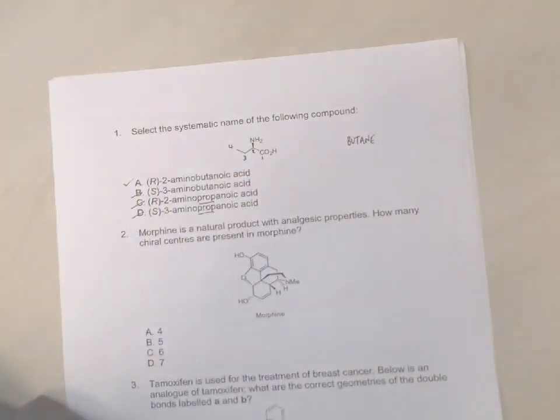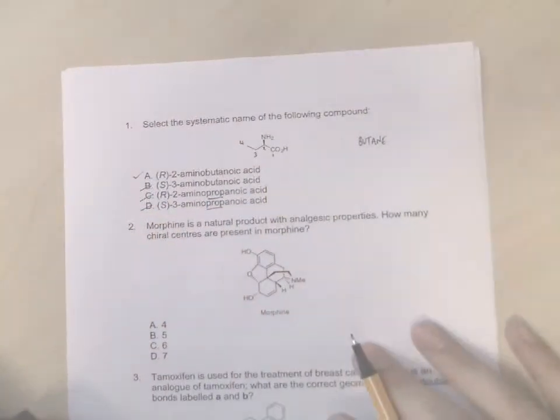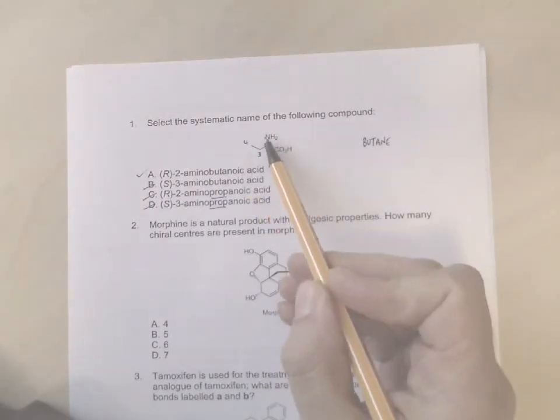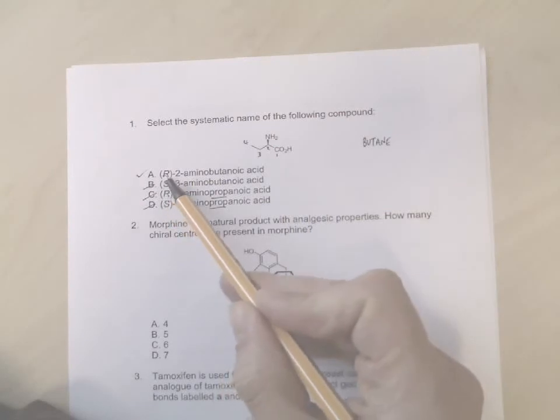And you can see that A is two-amino-butanoic acid. B is three, so we can get rid of that. So we don't even have to work out if it's R or S. So the answer there is two-amino-butanoic acid. But for your own revision, see if you can work out the absolute configuration of that chiral center to see if it is indeed R.